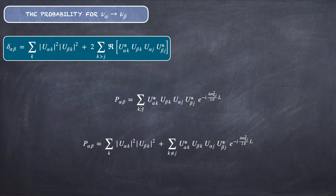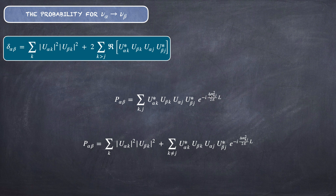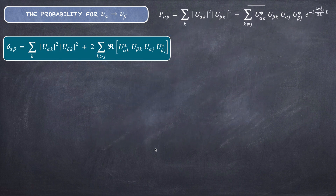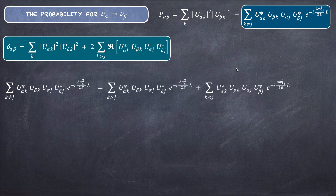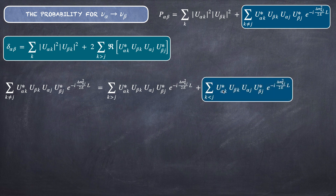Returning to P_αβ, we separate the double summation into J = K and J ≠ K. When J = K, the exponential gives e^0 = 1, so the Δm² term vanishes and we get the matrix element products directly. For J ≠ K, we again split into K > J and K < J summations and interchange K and J in the K < J term.